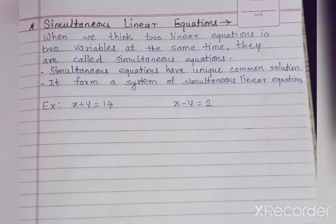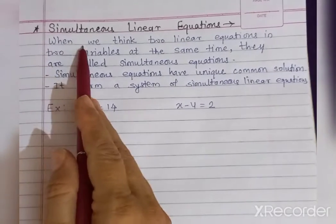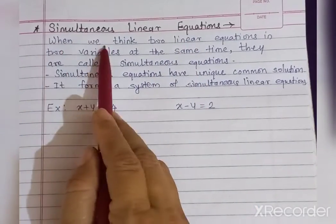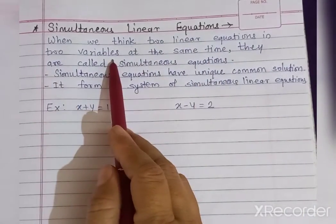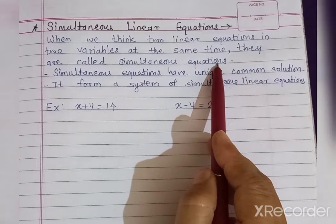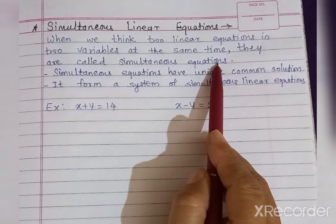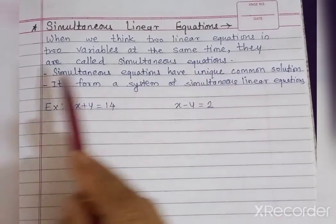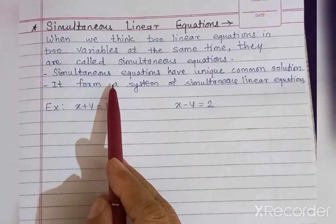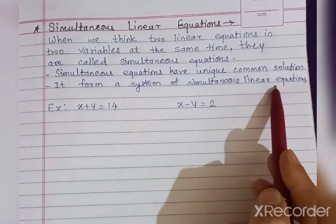Hello friends. This is our second video of linear equations in two variables. In this we are going to study simultaneous linear equations. When we think of two linear equations in two variables at the same time, they are called simultaneous equations. Simultaneous equations have a unique common solution, and if we take any two simultaneous equations their solution is unique. They form a system of simultaneous linear equations.